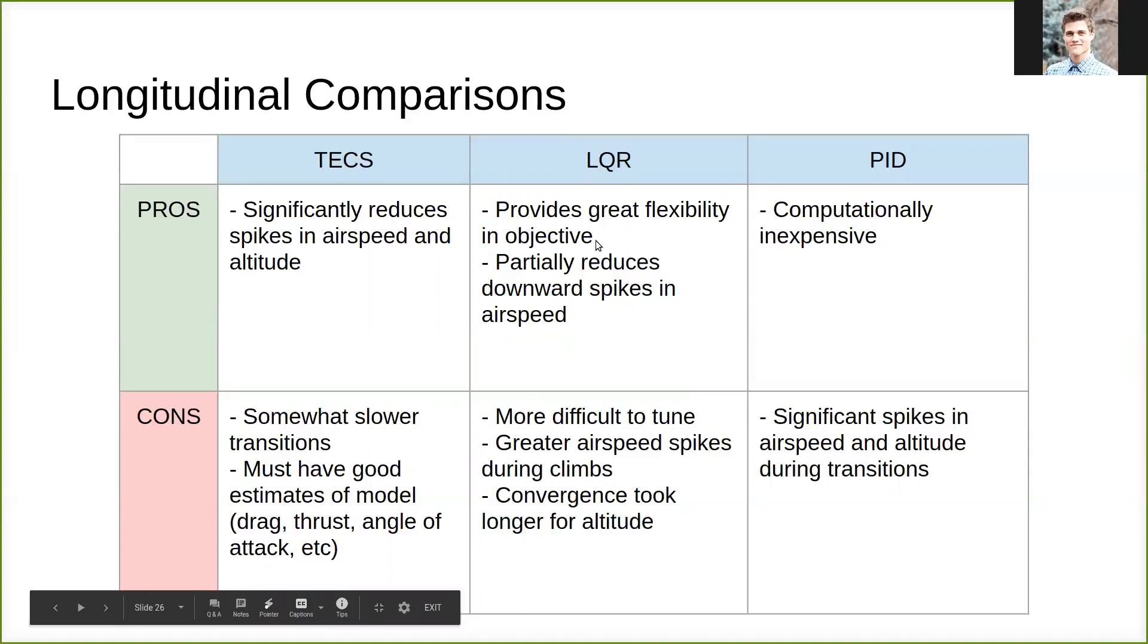LQR provides great flexibility in your objective, and it partially reduces the downward spikes in your airspeed, reduces that oscillation, but it's difficult to tune. You have greater spikes during climbs, in the way that I tuned it at least, and the convergence took longer for altitude in some cases.